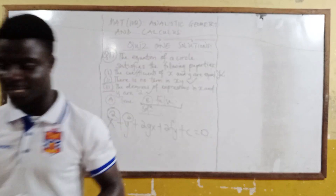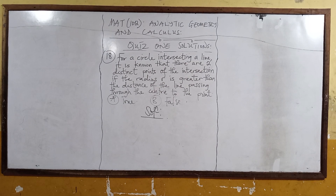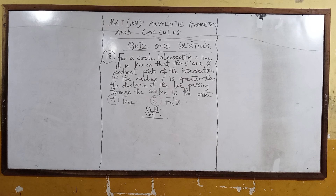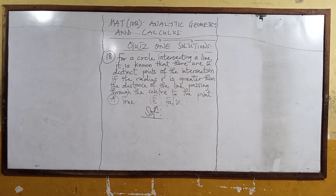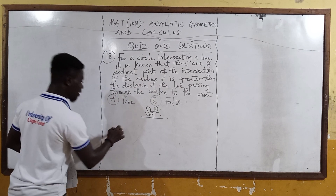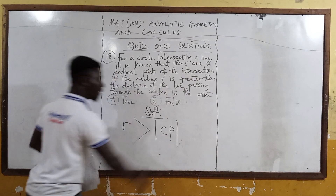Let's proceed to question 18, which is question 20 on your question paper. For a circle intersecting a line, it is known that there are two distinct points of intersection if the radius R is greater than the distance of the line passing through the center to the point. The statement says false — but we are saying that the radius R is greater than the distance D.